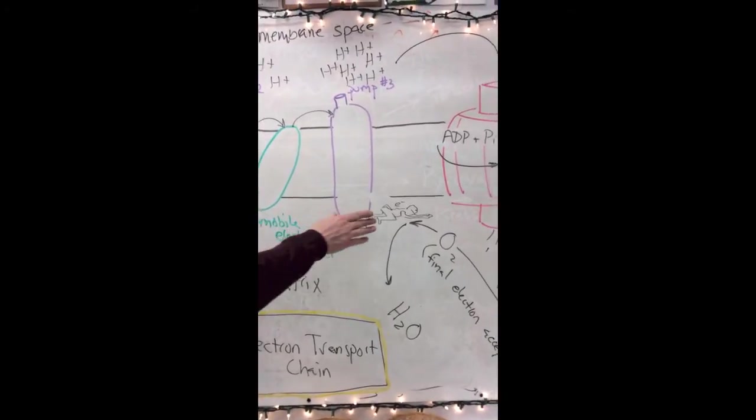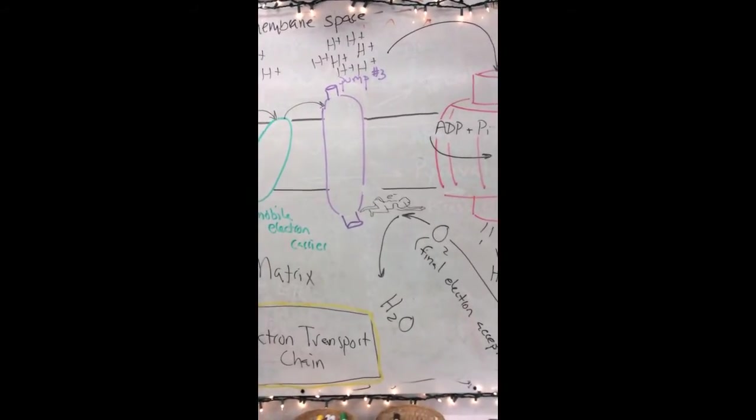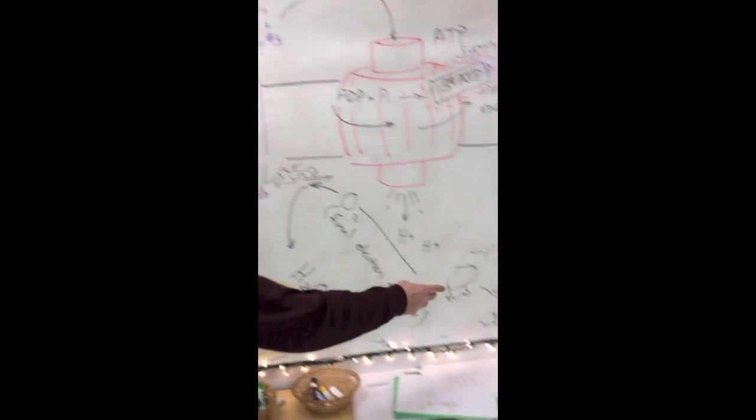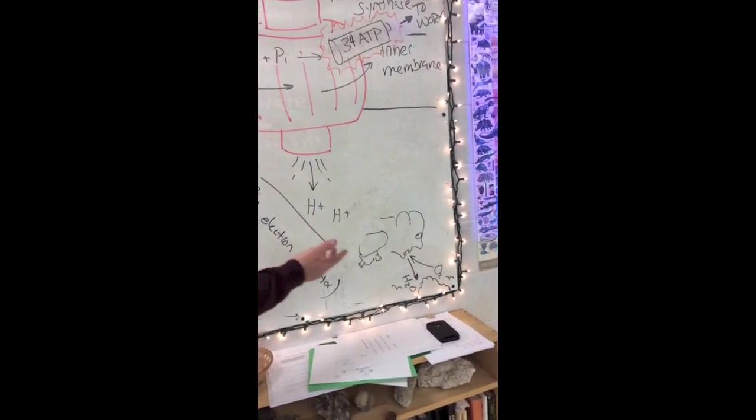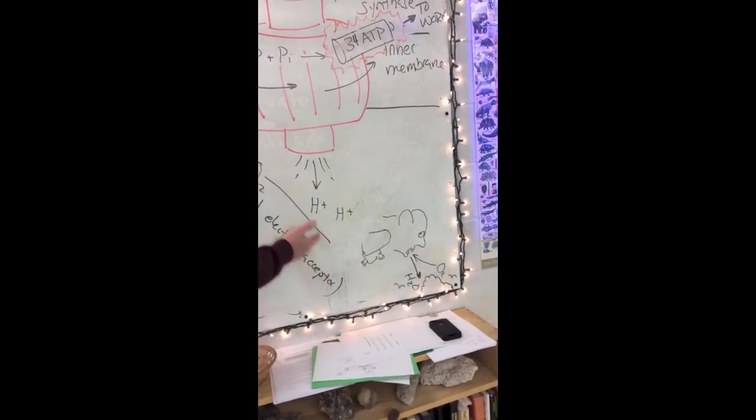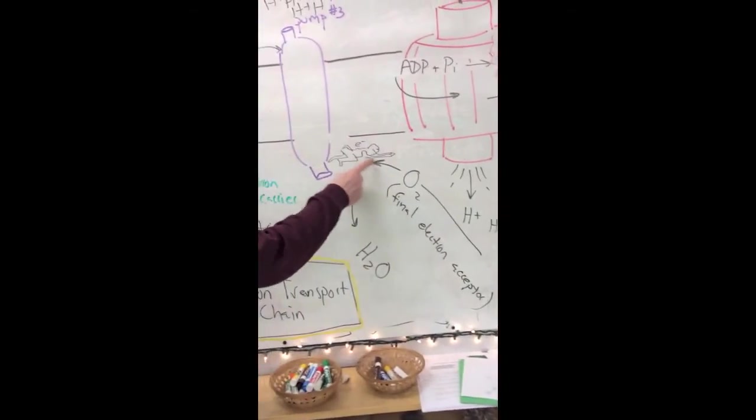In order to carry this low energy electron out, oxygen is taken in by the organism. Some other electron carriers are used in other organisms, but typically it's oxygen. It comes in, has a high affinity for electrons, it's highly electronegative.